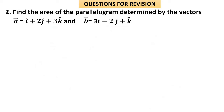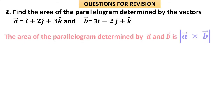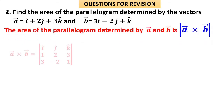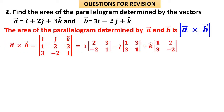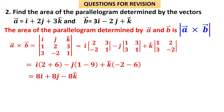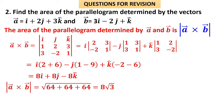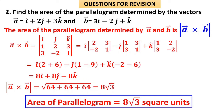Question 2: Find the area of the parallelogram determined by vectors a and b (adjacent sides). The area equals |a × b|. Computing a × b: first row i, j, k; second row 1, 2, 3; third row 3, −2, 1. Expanding gives i(2·1 − 3·(−2)) − j(1·1 − 3·3) + k(1·(−2) − 2·3) = 8i + 8j − 8k. Its magnitude is √(64 + 64 + 64) = 8√3. The area of the parallelogram is 8√3 square units.